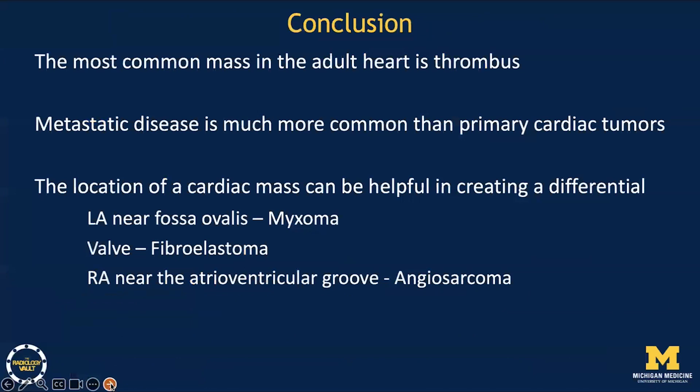In conclusion, the most common mass in the heart is thrombus. Metastases are much more common than primary cardiac tumors. And tumor location can be very helpful in formulating your diagnosis or differential diagnosis.